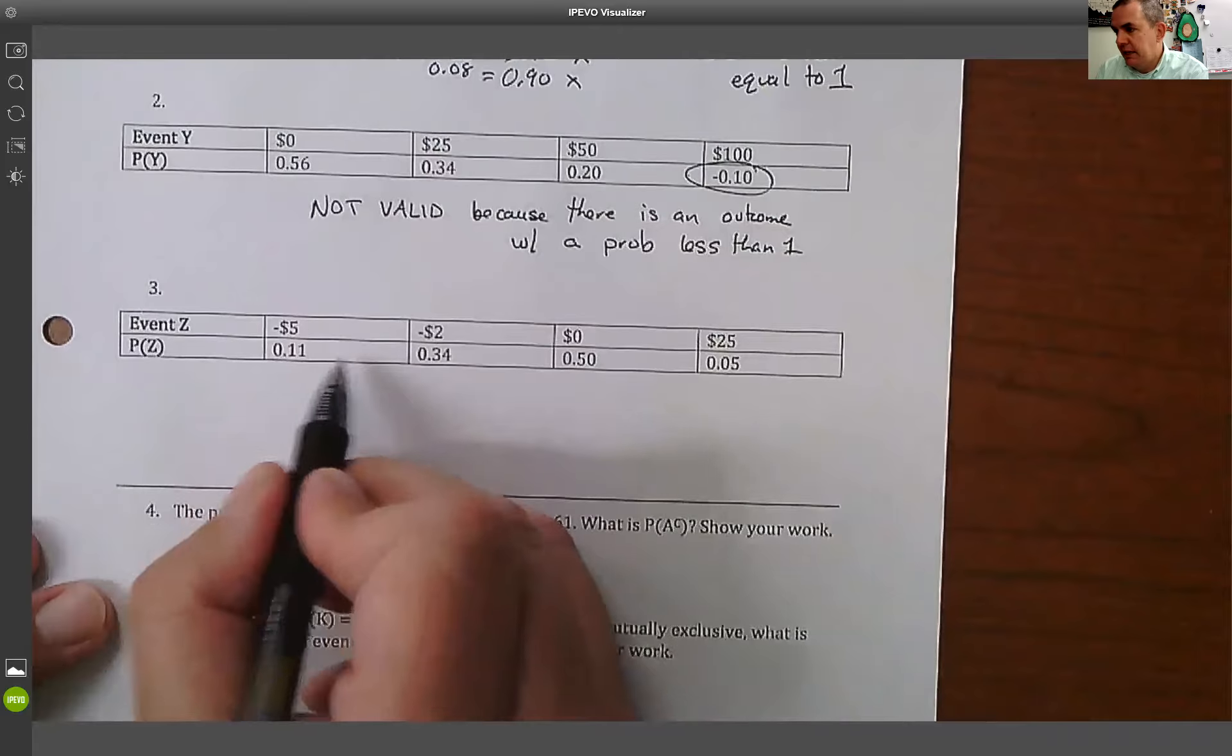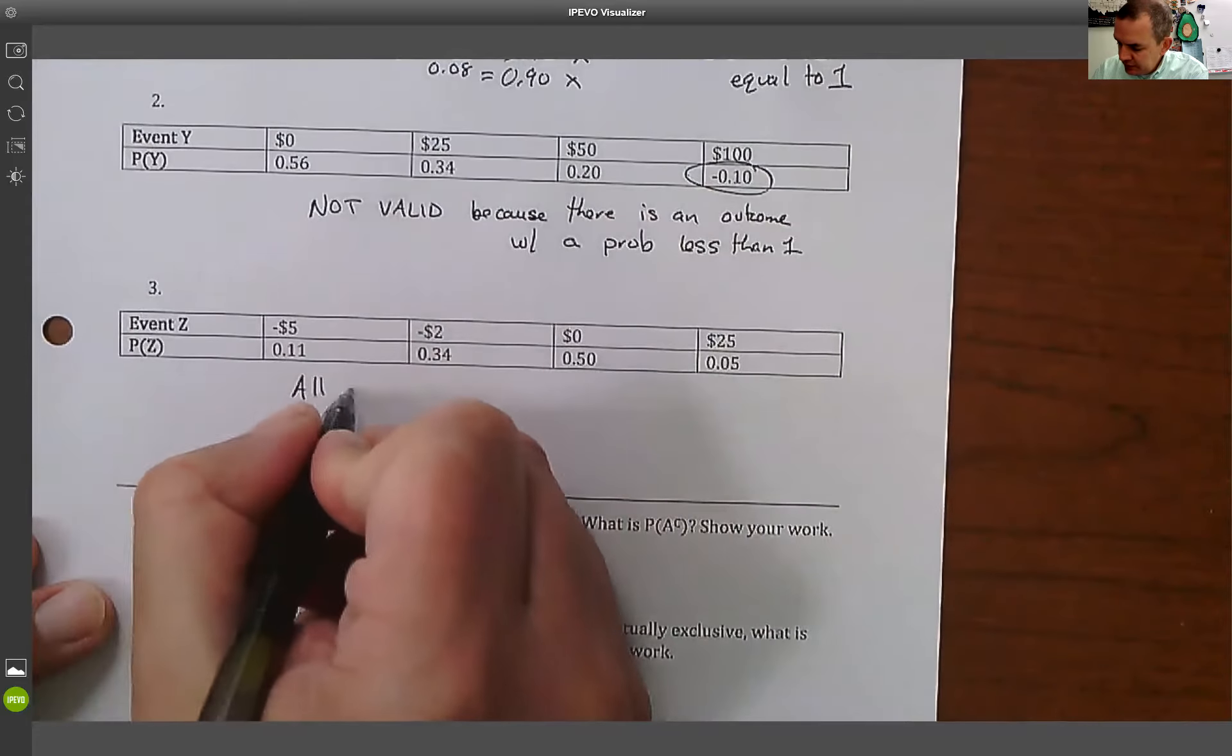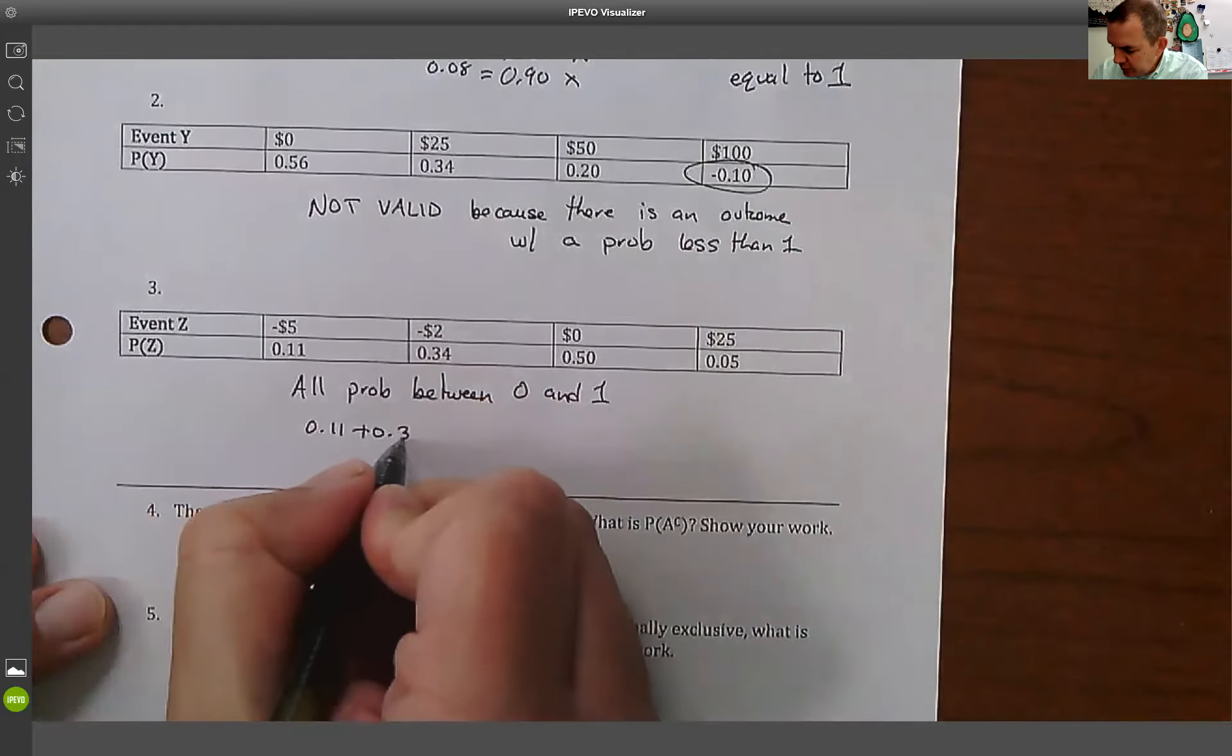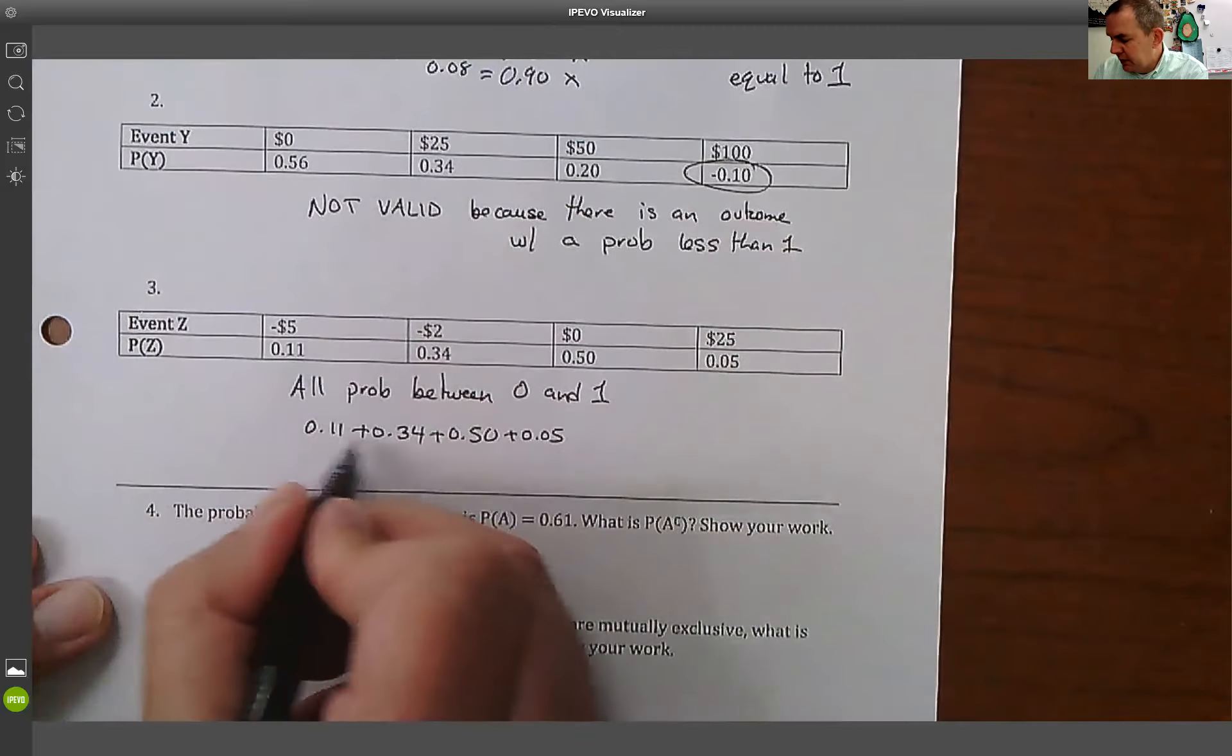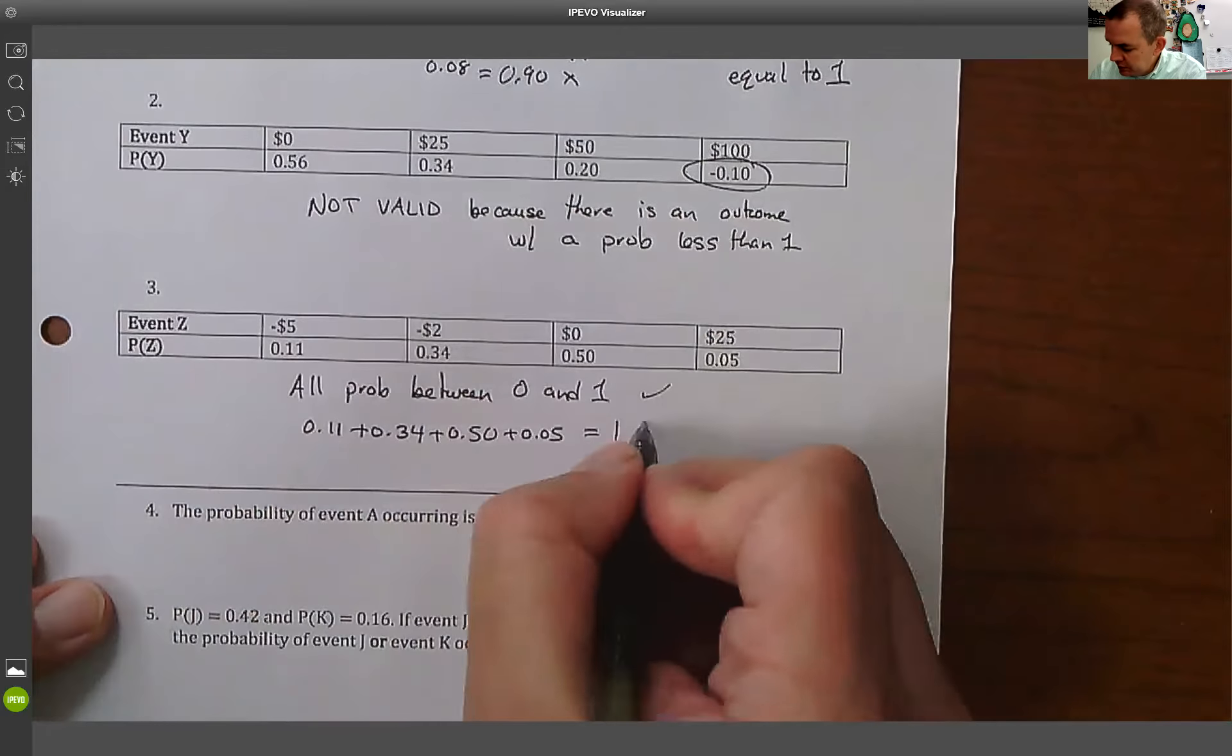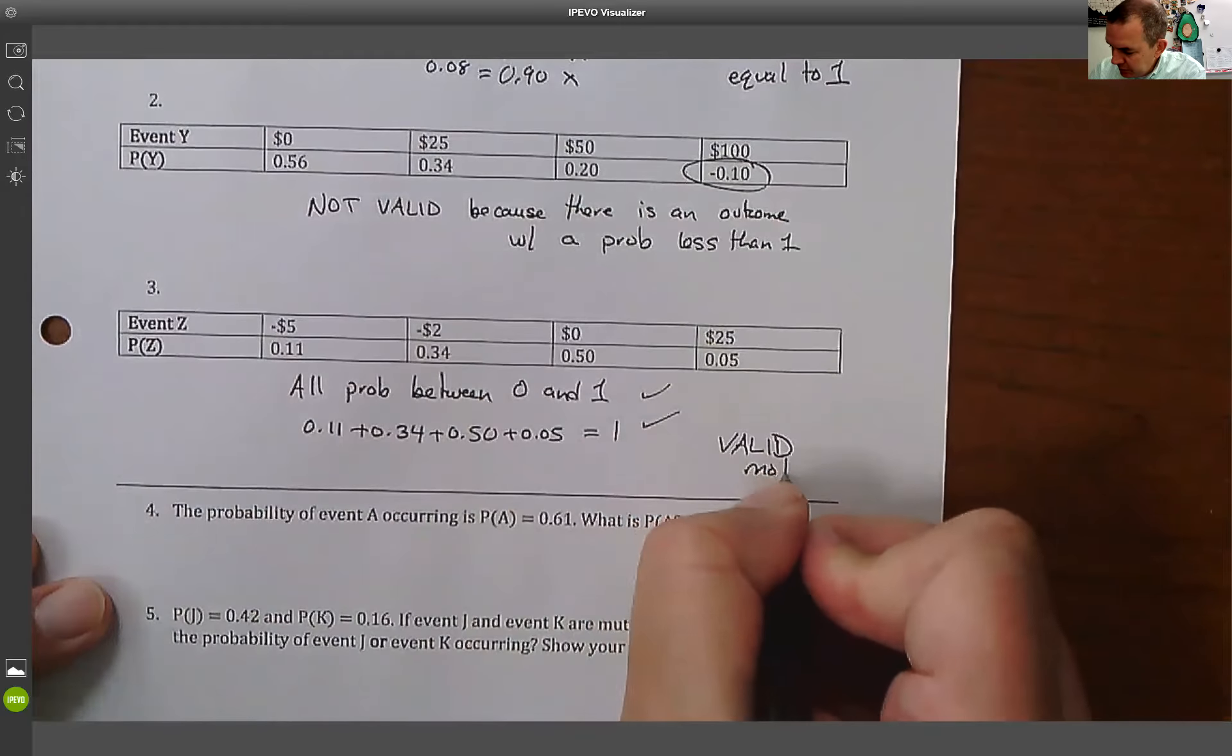This last one, if we go through and look at it, all those are positive. So all the probabilities are between 0 and 1. And if we add those up: 0.11 plus 0.34 plus 0.50 plus 0.05, well, 45 and 50 is 95 plus 5, that gives me 1. So this is a valid model. So that was what we talked about last time.